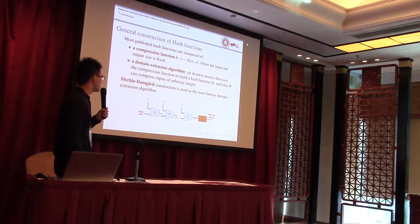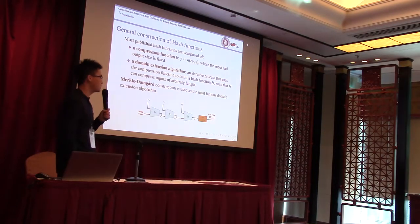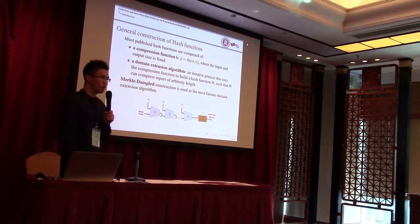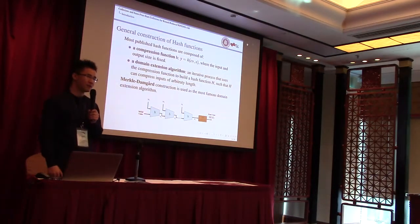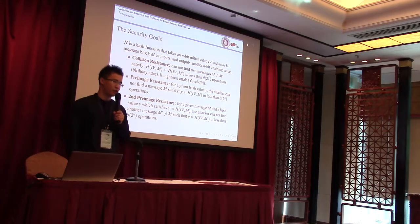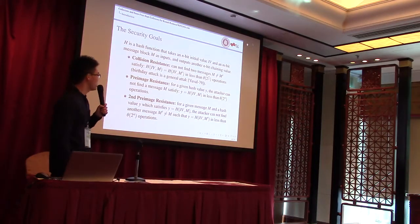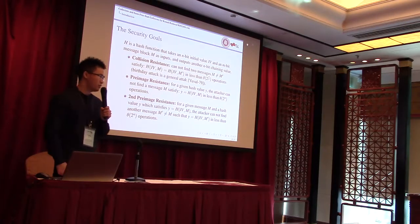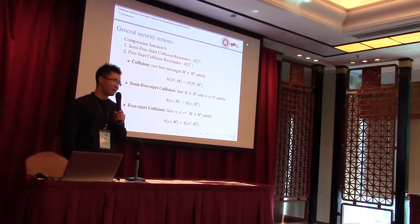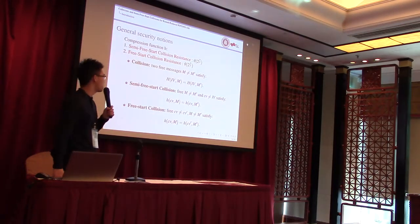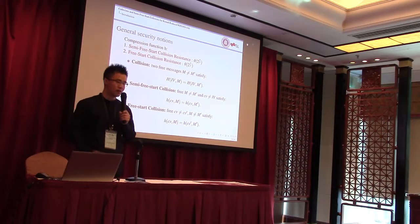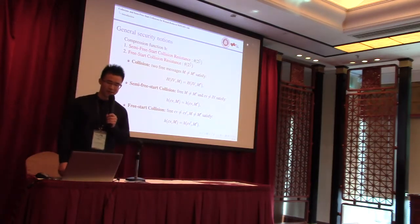Most published hash functions are based on the Merkle-Damgård paradigm by iterating a compression function with fixed input size and output size. Therefore, a hash function can compress arbitrary messages and output a fixed-length hash value. For a hash function, there are three basic security requirements: collision resistance, pre-image resistance, and second pre-image resistance. Since a hash function compresses arbitrary messages by iterating a compression function, the compression function itself should also satisfy some security requirements: semi-free-start collision resistance and free-start collision resistance.